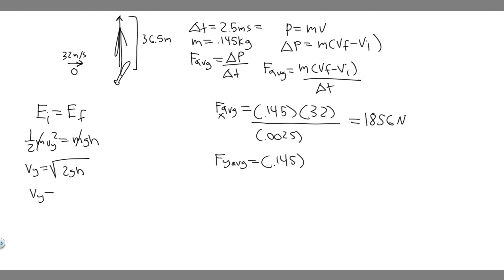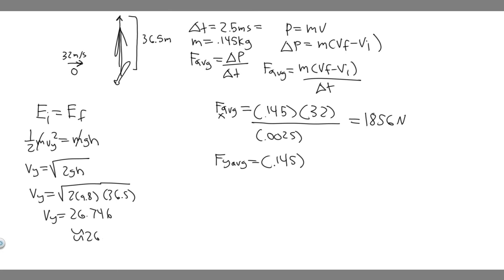So v_y equals the square root of 2 times 9.8 times the height, which is 36.5 meters. Plugging in: 2 times 9.8 times 36.5 gives v_y equals 26.75 meters per second. You can use the more exact value 26.746, but rounding to 26.75 won't make a significant difference.